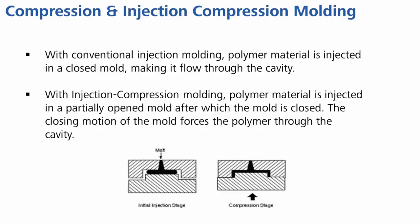With injection compression molding, material is injected into an open mold. After the material is injected, the mold will close, which forces the material to flow through the cavity.